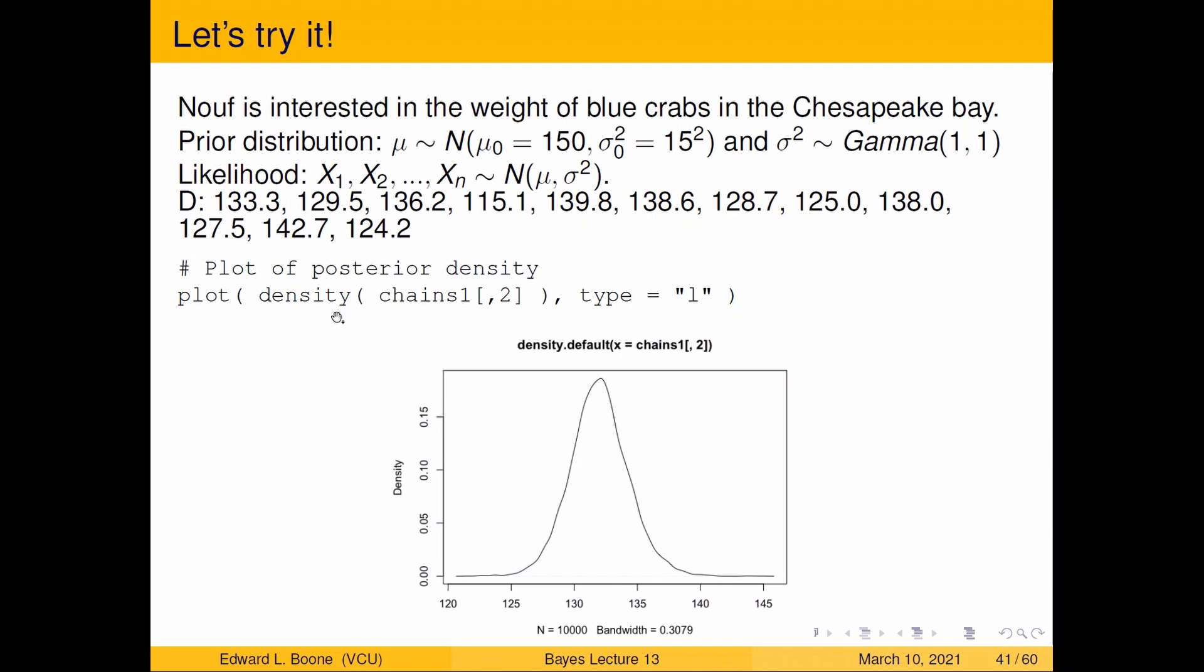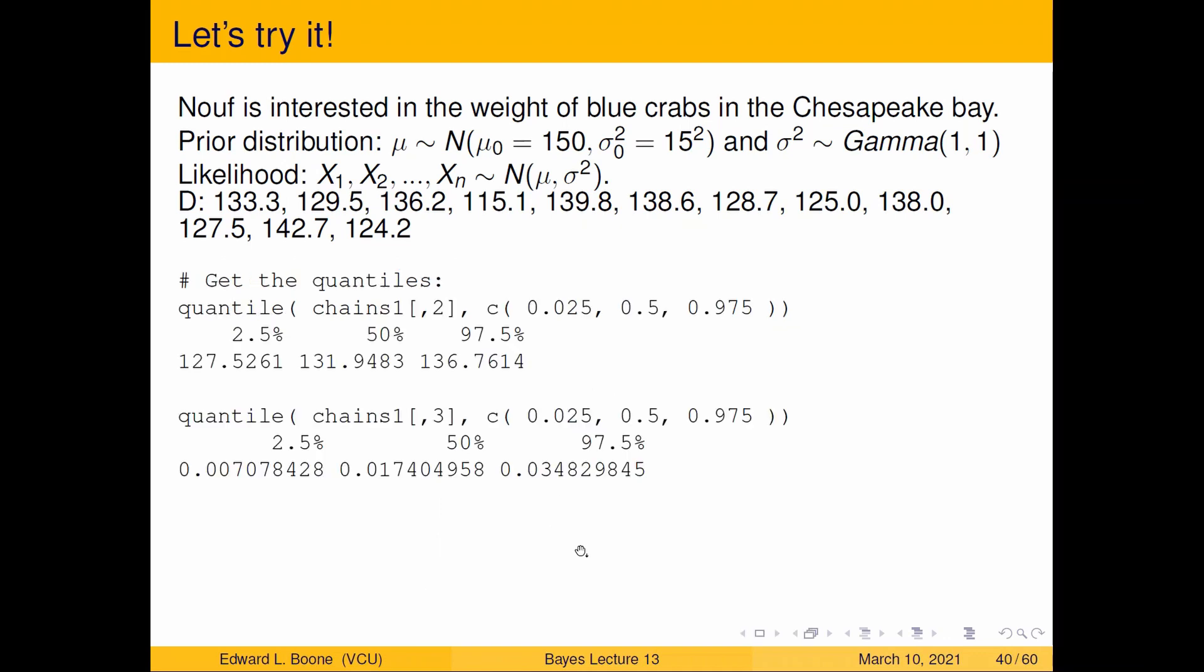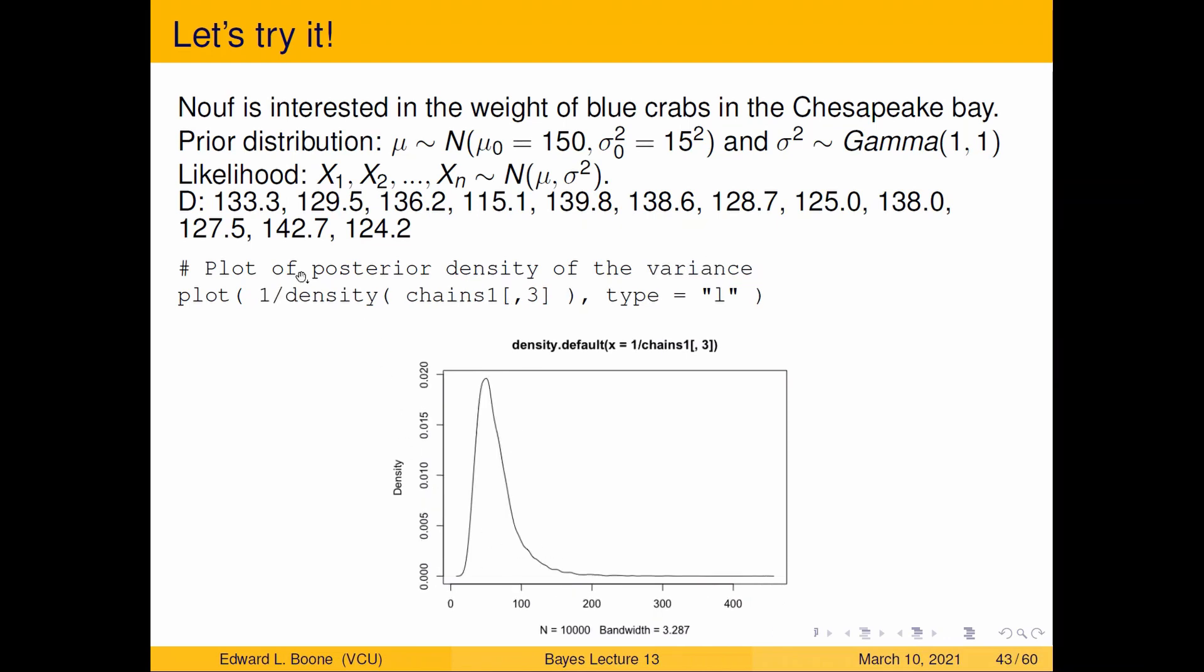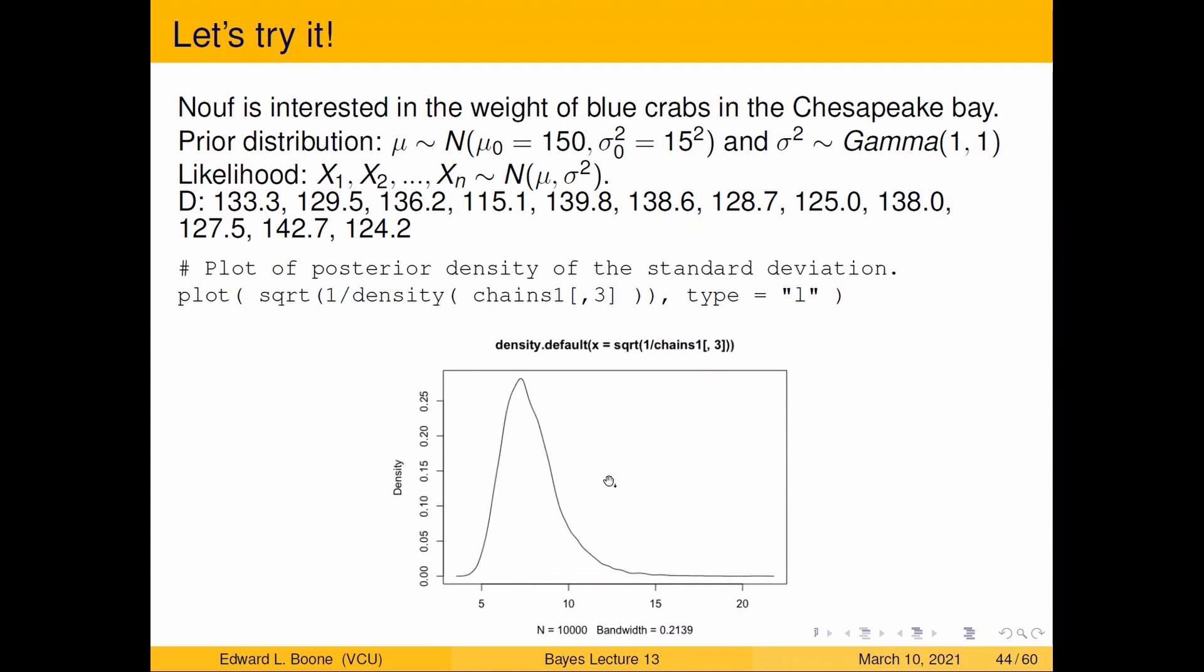We can use the plot(density(chains1[,2], type='l')) and you can see you get this nice picture here of what the posterior looks like for the first one and for the second one. Notice that this one's way more symmetric and this one's more right-skewed, just like we would expect means and variances to be. And then if we did one over the density, this is what we get here, which is more like what we would be after. And then I can take square root of that, then it becomes more like a standard deviation.